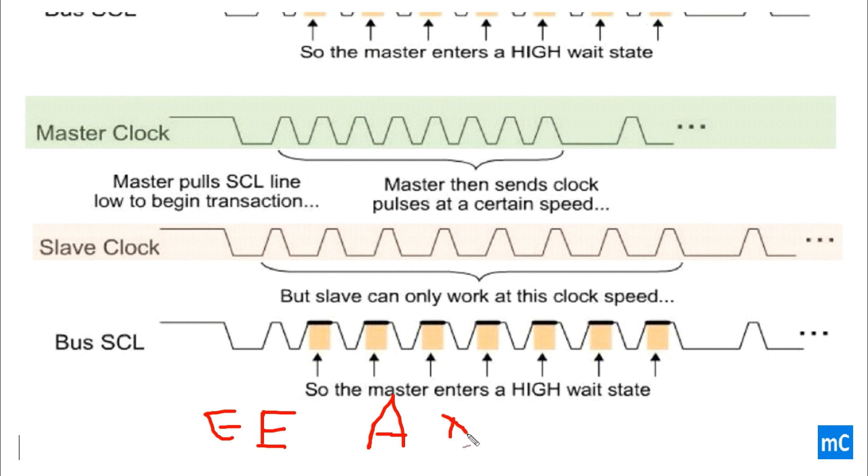Like ADC needs to do some conversion. EEPROM needs to read from the memory. That may not be synchronized with the master speed. So, the thing is the master will be operating on its own speed.